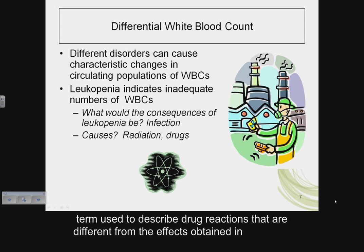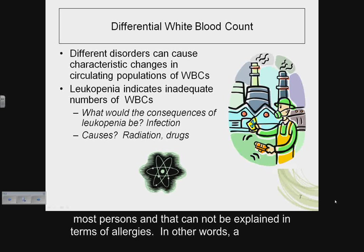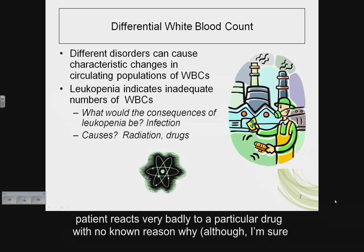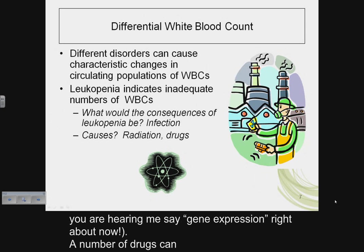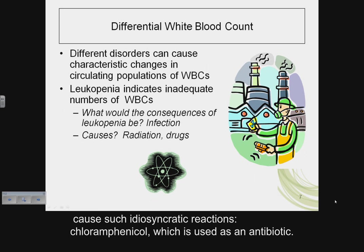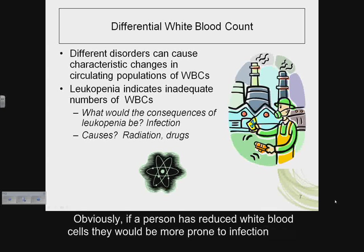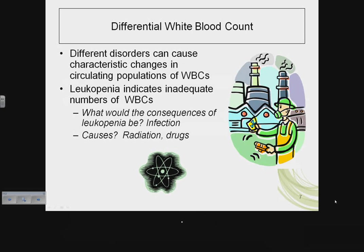Idiosyncratic is a term used to describe drug reactions that are different from the effects obtained in most persons and cannot be explained in terms of allergies — in other words, a patient reacts very badly to a particular drug with no known reason why. A number of drugs can cause such reactions; chloramphenicol, used as an antibiotic, is an example. Obviously, if a person has reduced white blood cells they would be more prone to infection.